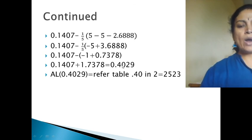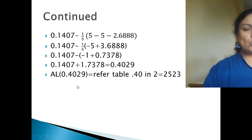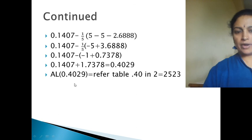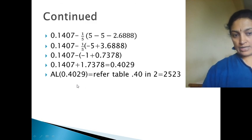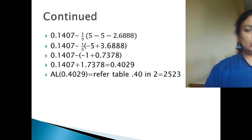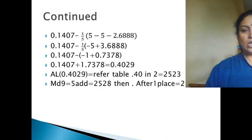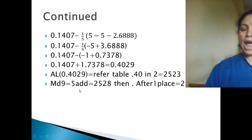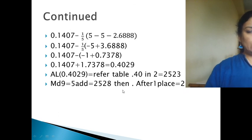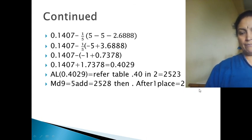Now we take antilog of 0.4029. Refer the antilog table for 0.40, second column, getting 2523. Mean difference 9 gives 5, so 2523 + 5 = 2528. The characteristic is 0, so we place the decimal after one digit: the final answer is 2.528.